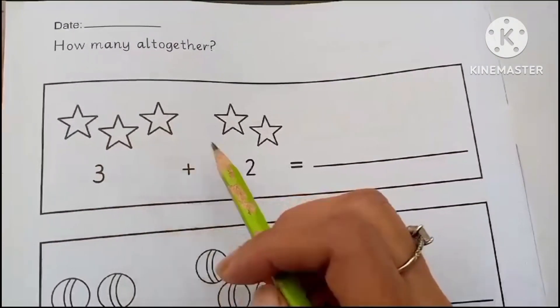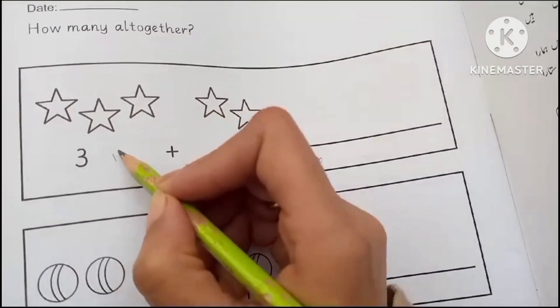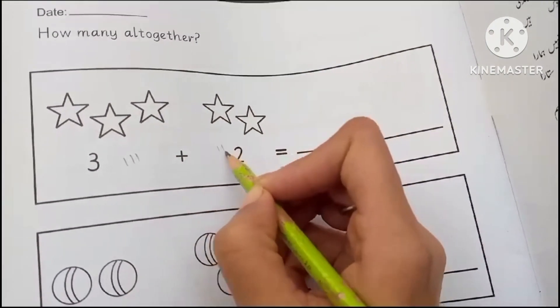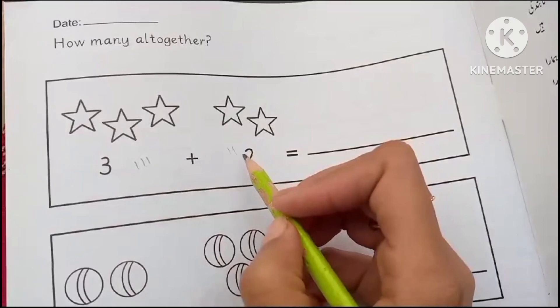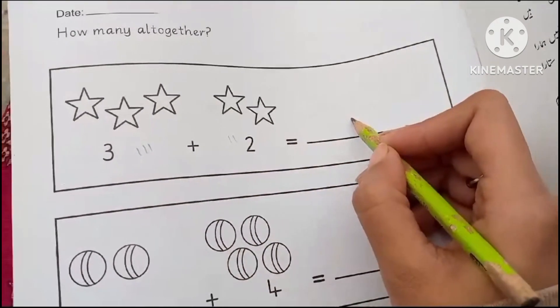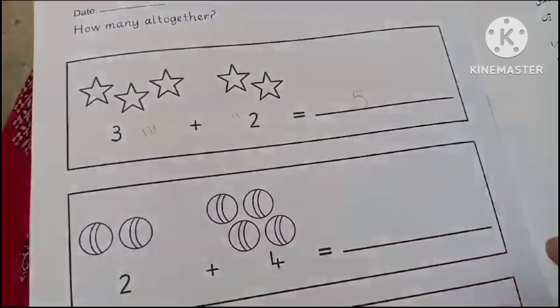Now 1, 2, 3, 1, 2. 1, 2, 3, 4, 5. 5 stars.